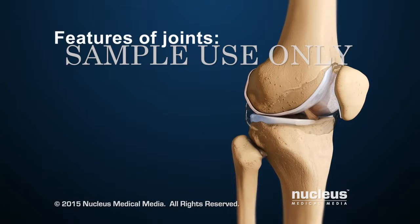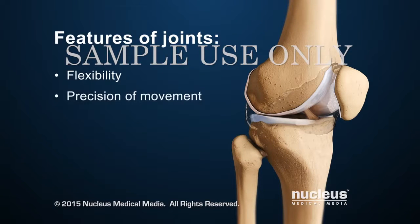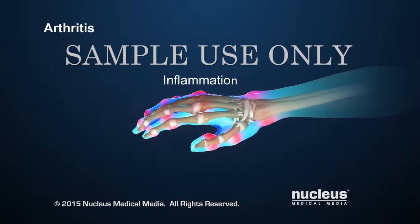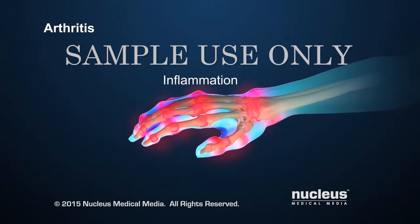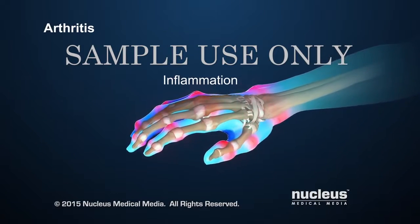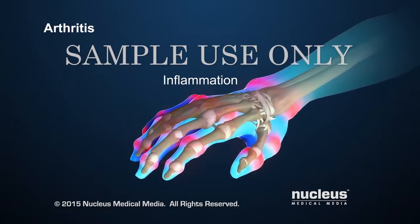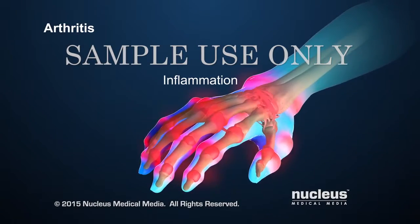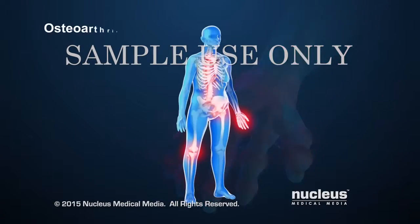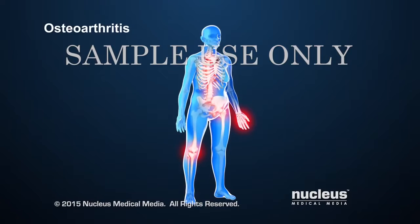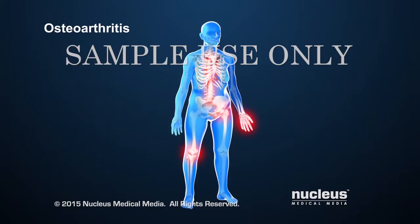Joints give the body flexibility, precision of movement, and help in supporting the body's weight. Arthritis is any disorder that affects joints. It can cause pain and inflammation. Osteoarthritis, or degenerative joint disease, is the most common type of arthritis.